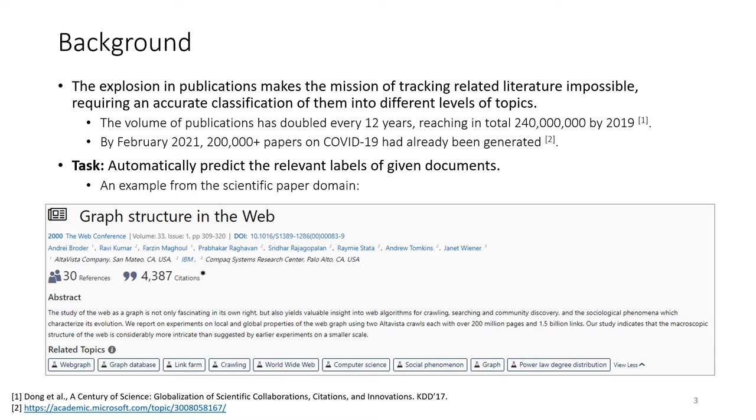We show an example from the scientific paper domain. This is a classic paper, Graph Structure in the Web, published in WWW 2000, and we can see its related topics here, including both coarse-grained ones like computer science and the World Wide Web, and fine-grained labels like web graph and the power law degree distribution.